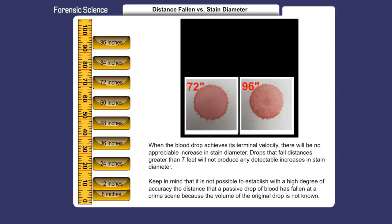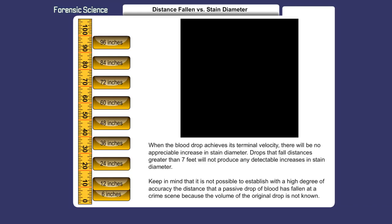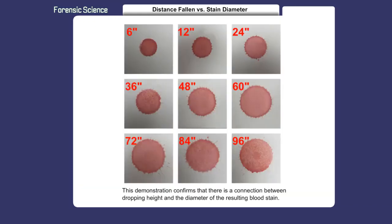Keep in mind that it is not possible to establish, with a high degree of accuracy, the distance that a passive drop of blood has fallen at a crime scene, because the volume of the original drop is not known. This demonstration confirms that there is a connection between dropping height and the diameter of the resulting blood stain.